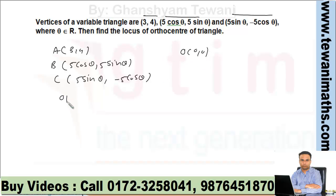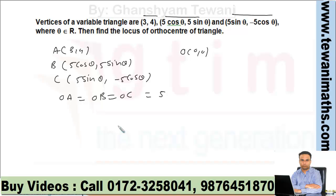Now here OA = OB = OC, all these distances are 5. Since all three vertices of the triangle have equal distance from the origin, the origin is the circumcenter of the triangle. So O(0,0) is the circumcenter of the triangle.